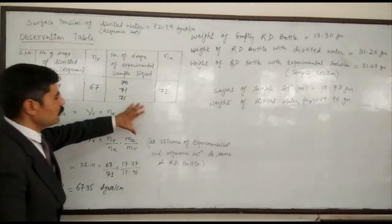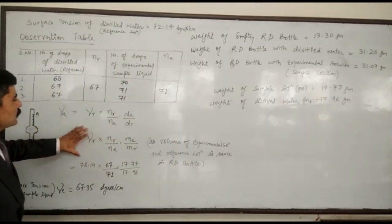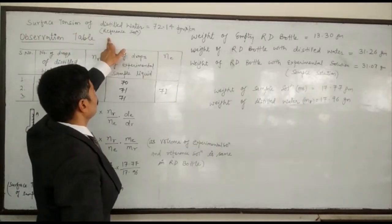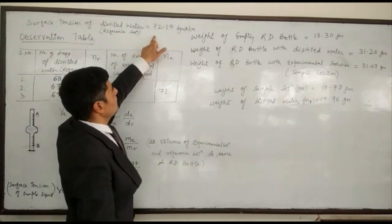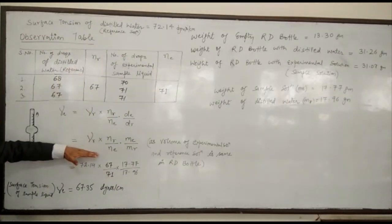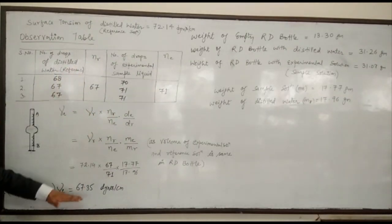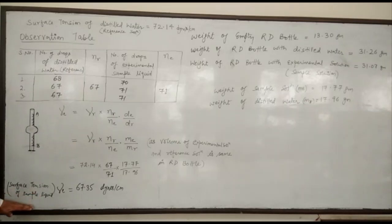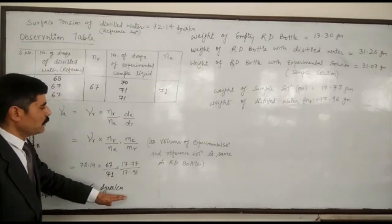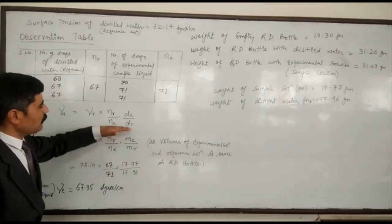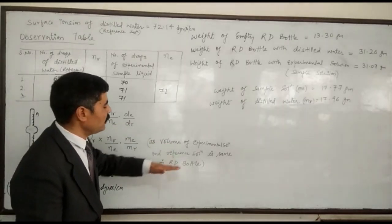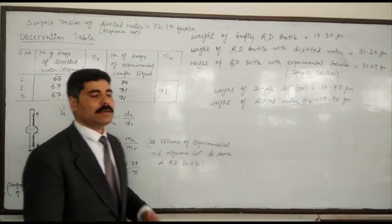We put all these values into the formula. The surface tension of distilled water, the reference solution, is 72.14 dynes per centimeter. After substituting all values and calculating, the surface tension of the sample solution is found to be 67.35 dynes per centimeter. The density is derived from the mass, as the volume of the experimental solution and the reference solution is the same in the RD bottle.